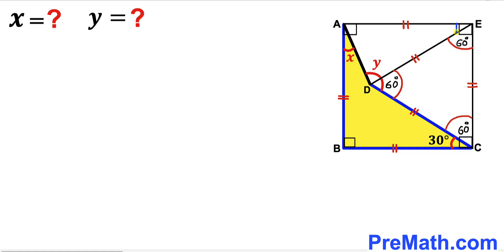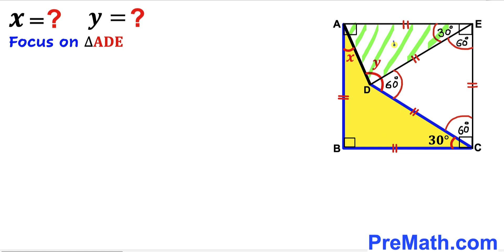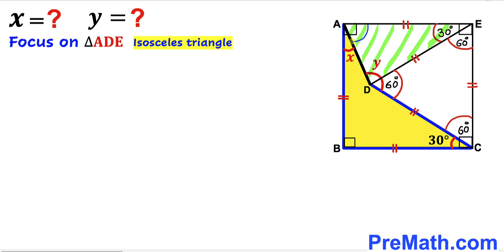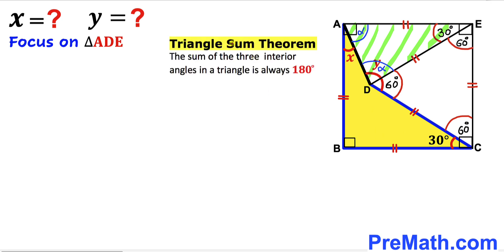Next observation: the angle at E in the square is 90 degrees, and the whole angle CED from the equilateral triangle is 60 degrees, so the remaining angle DEA is 30 degrees. Focusing on triangle ADE, it is an isosceles triangle since AE equals DE. Let's label the base angles as alpha — both angle DAE and angle ADE equal alpha.